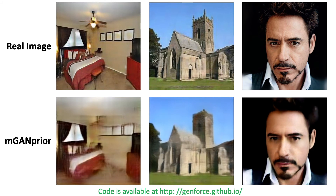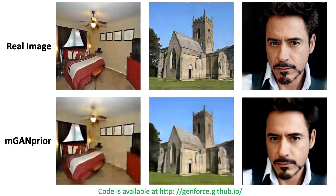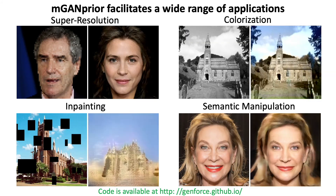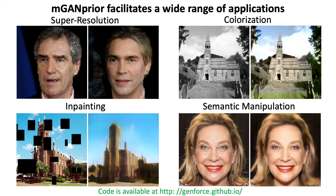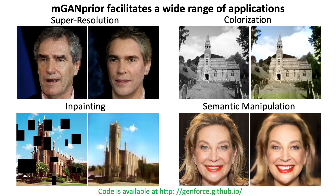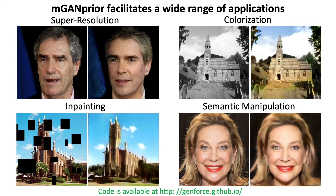The proposed Multicode GAN Prior can faithfully reconstruct the target image with pre-trained GAN models. It can also be applied to a range of real-world applications, such as super-resolution, colorization, inpainting, and semantic manipulation.